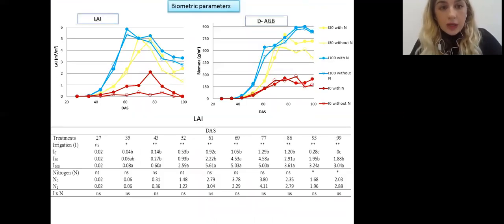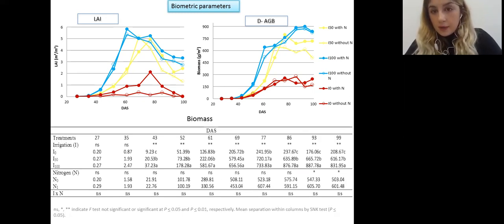For this slide, you can see biometric parameters, leaf area index and dry above ground biomass with statistical analysis presented. As you can see, the trend of the water regime treatment were well differentiated during the crop cycle. Also, it is clearly shown in statistical analysis that there is significance difference, while for nitrogen, we didn't found any difference in statistical analysis but on the graph you can see that the trend is very visible that there is difference between nitrogen treatment. This is for dry above ground biomass.